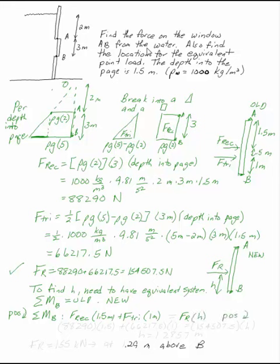I know what f rect is. This is 88,290 times 1.5, and I have 66,217.5 times 1 is 154,507.5. That's fr acting at H. You can tell that H is 1.2857 meters.